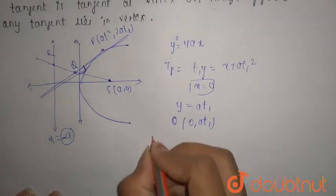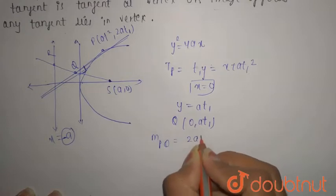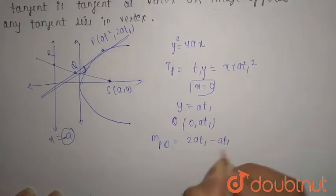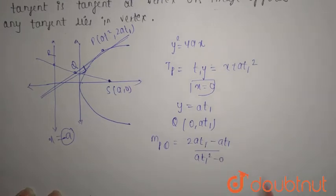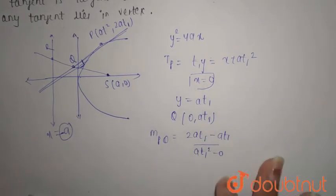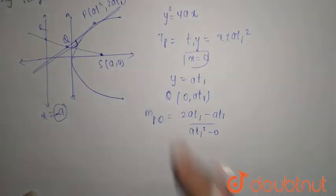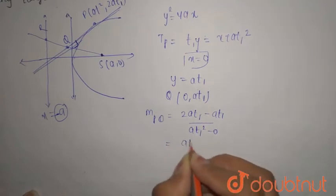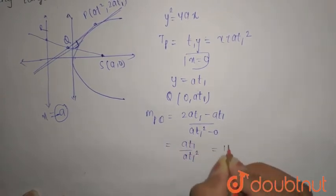Now, when you talk about the slope of PQ, it would be (2at₁ − at₁) divided by (at₁² − 0). That is from the point (0, at₁) to point P. So the slope of PQ simplifies to at₁ divided by at₁², which is 1/t₁.